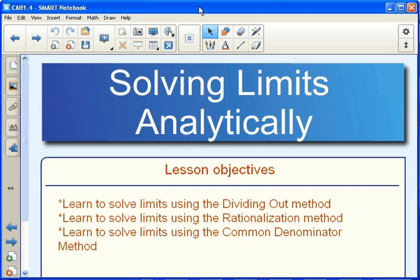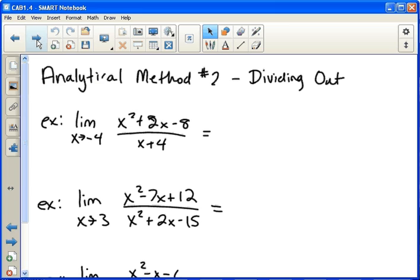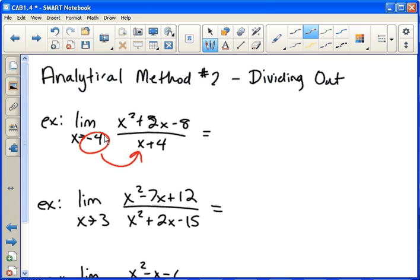First, dividing out. Another word for this one would be factoring out. You should always try direct substitution first, but if you notice, look what happens here. If we take this negative four and we plug it in for x, we get zero in the denominator. And that's not going to work. We cannot divide by zero.